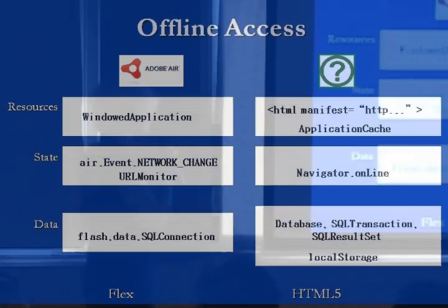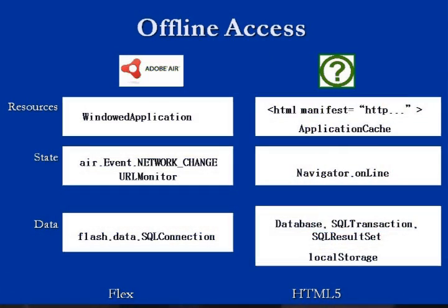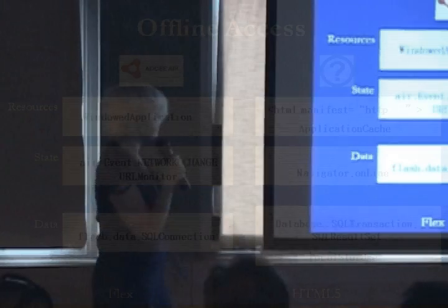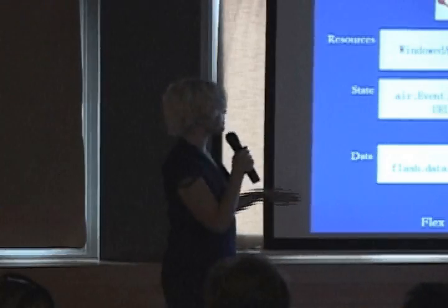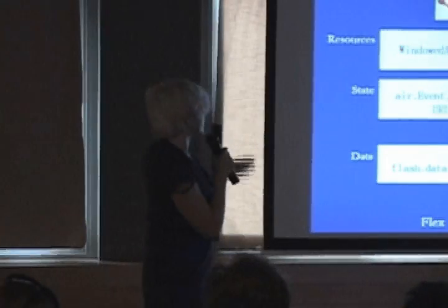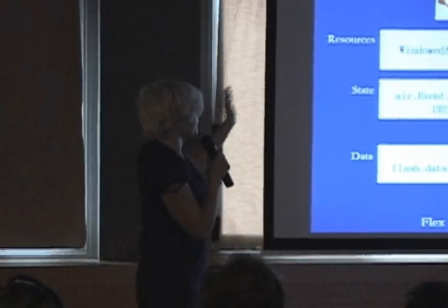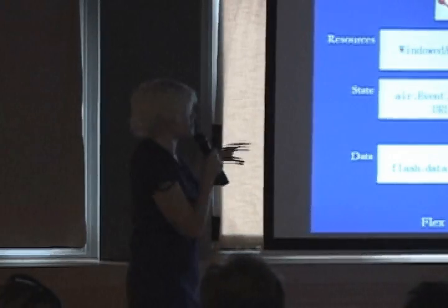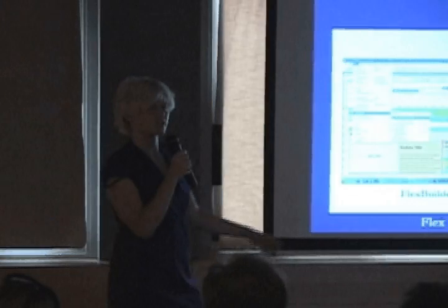Offline access — users want to be able to use apps offline. So you need to be able to cache your resources, your data, and hopefully know if your app is online so you can act differently. Both Flex and HTML5 — or Flex via Air — give us all the things we need to take an application offline.